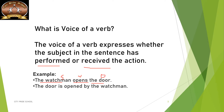Now the same sentence, if you see here, it has been changed: the door is opened by the watchman. Now here, has the door done anything? No. The door has not done anything — it is the action done by the watchman only. In the first sentence, the subject has performed the action. In the second sentence, the door is the receiver of the action. So the door becomes the subject here, which is the receiver of the action.